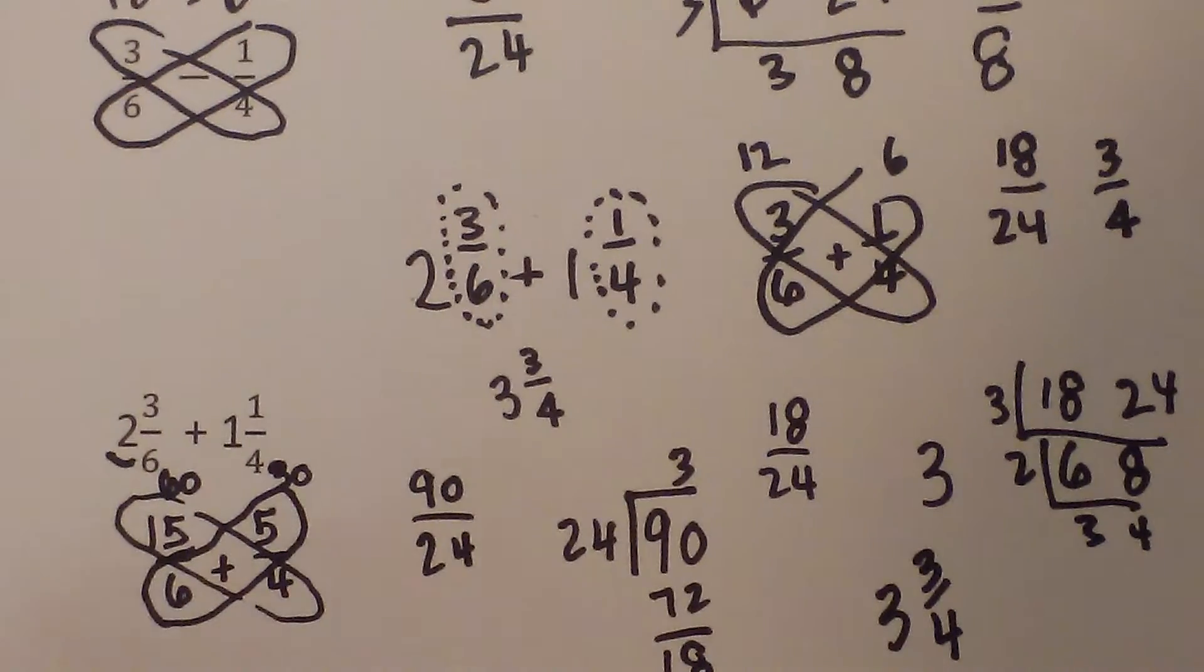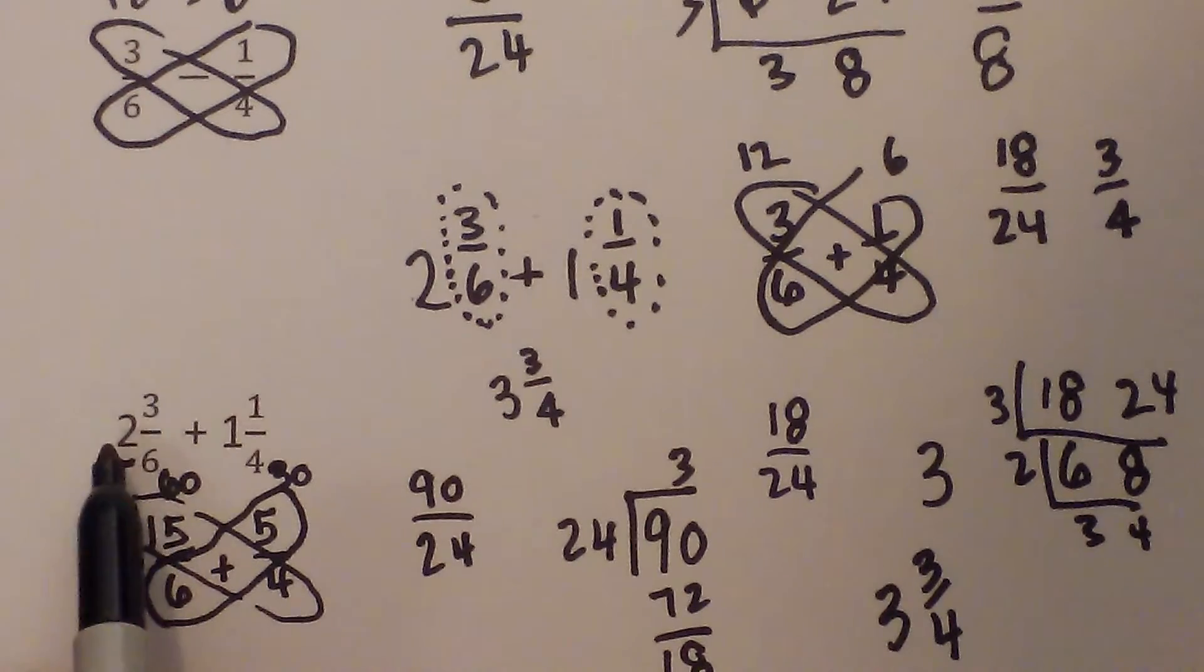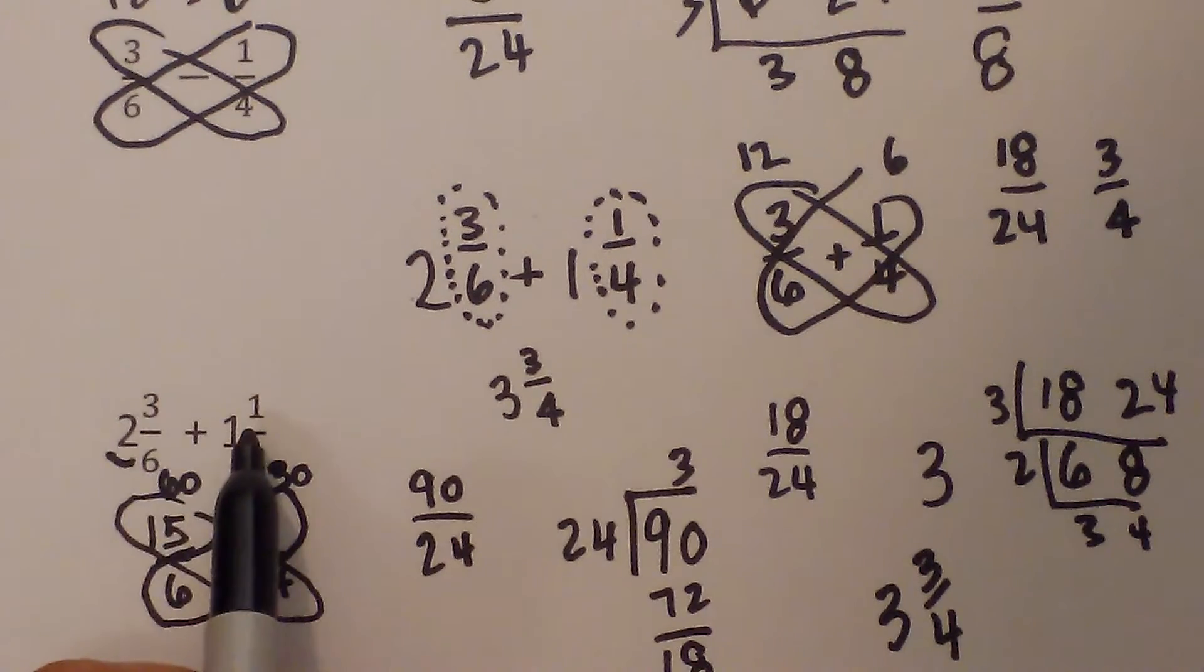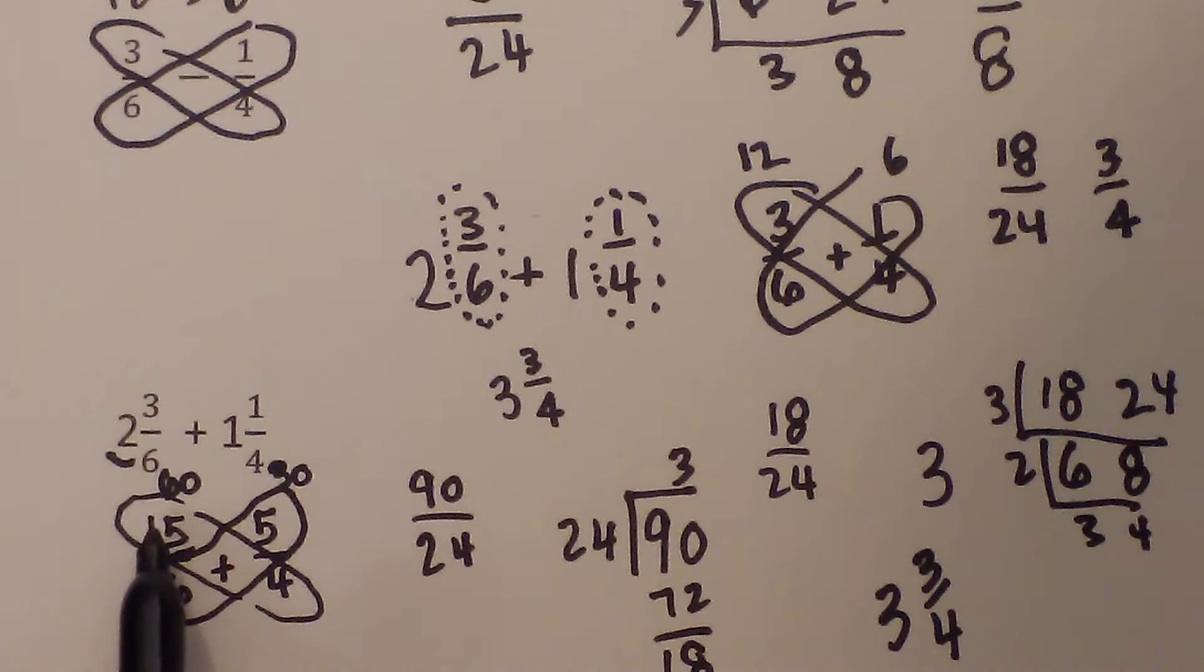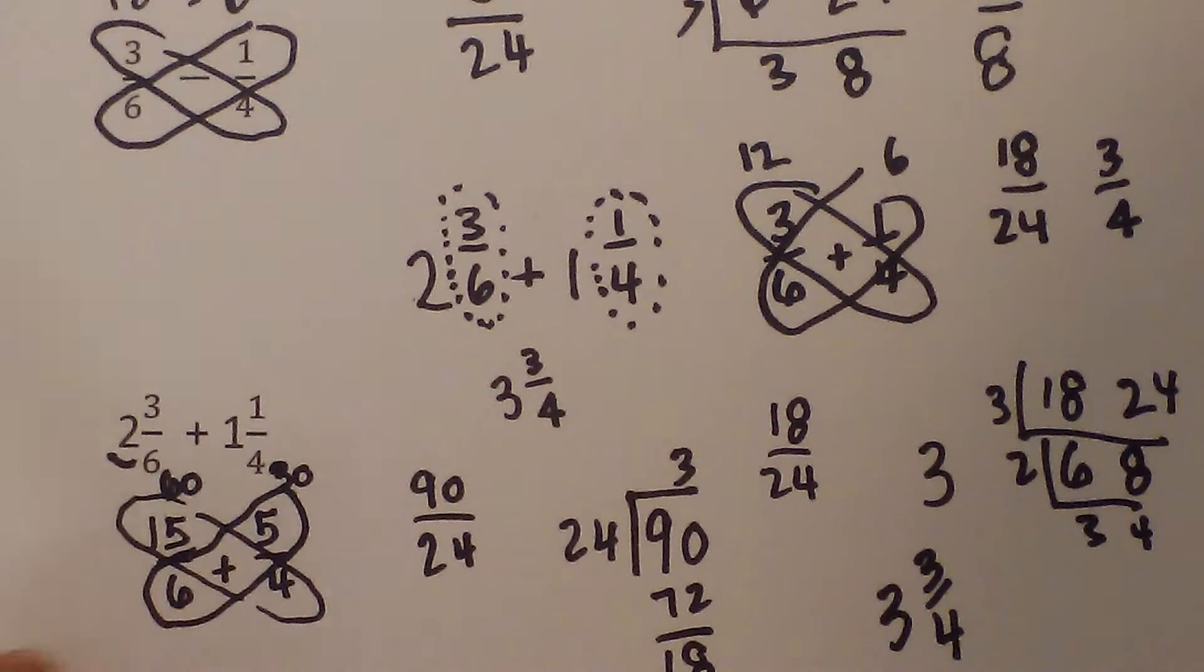So again what you can do whenever you have two mixed numbers, you can either add the whole numbers separately and the fractions separately, or you can create improper fractions and then simplify. Same answer.